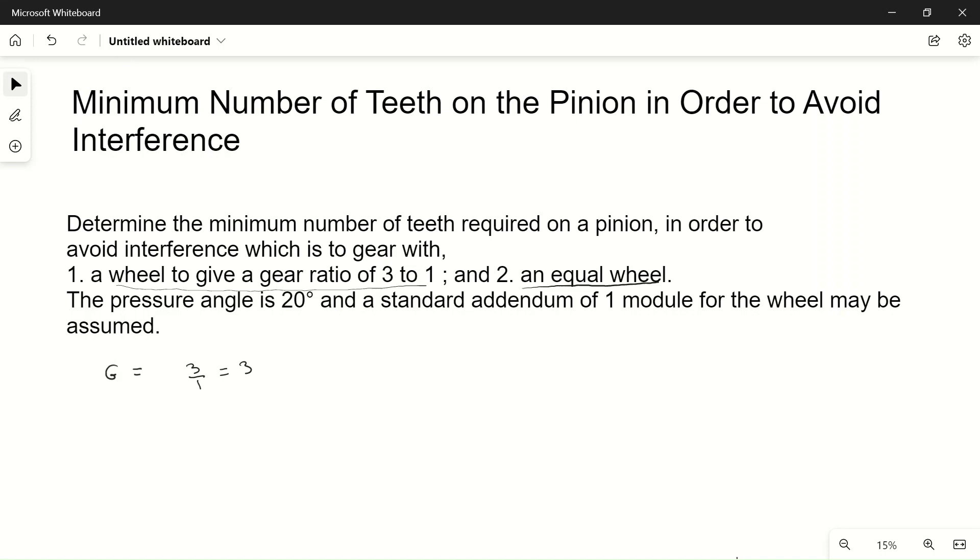The pressure angle is given as 20 degrees, so φ equals 20 degrees. The standard addendum is one module, so a_w divided by m equals one module divided by m, which equals one. So the value of a_w will be one.